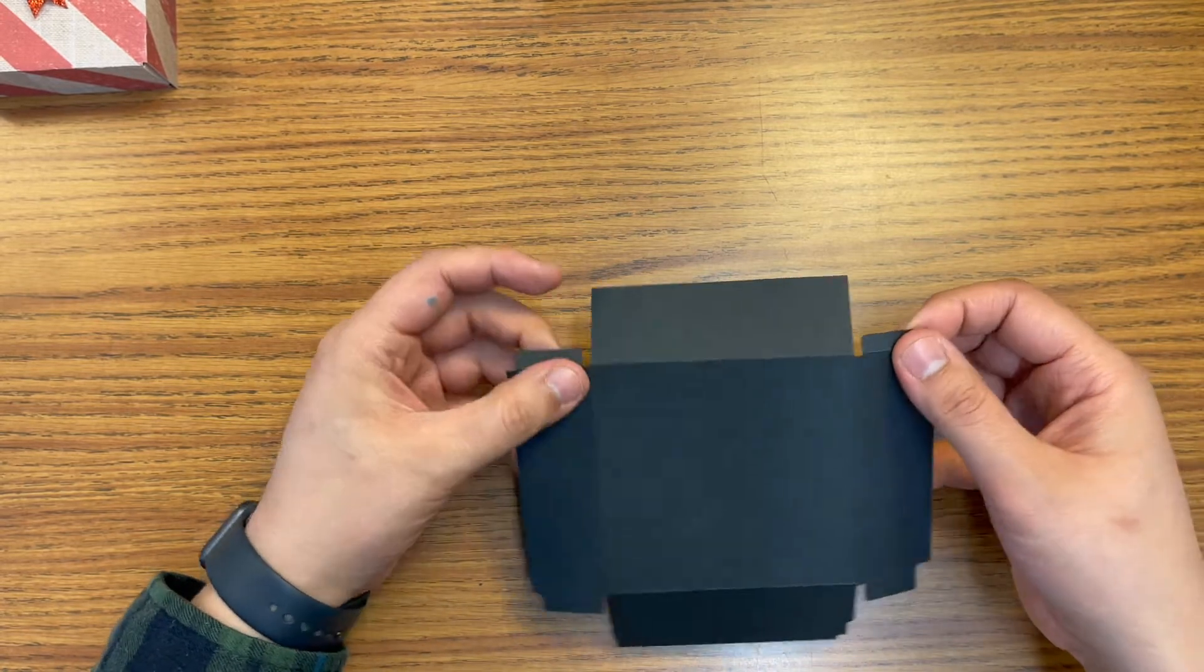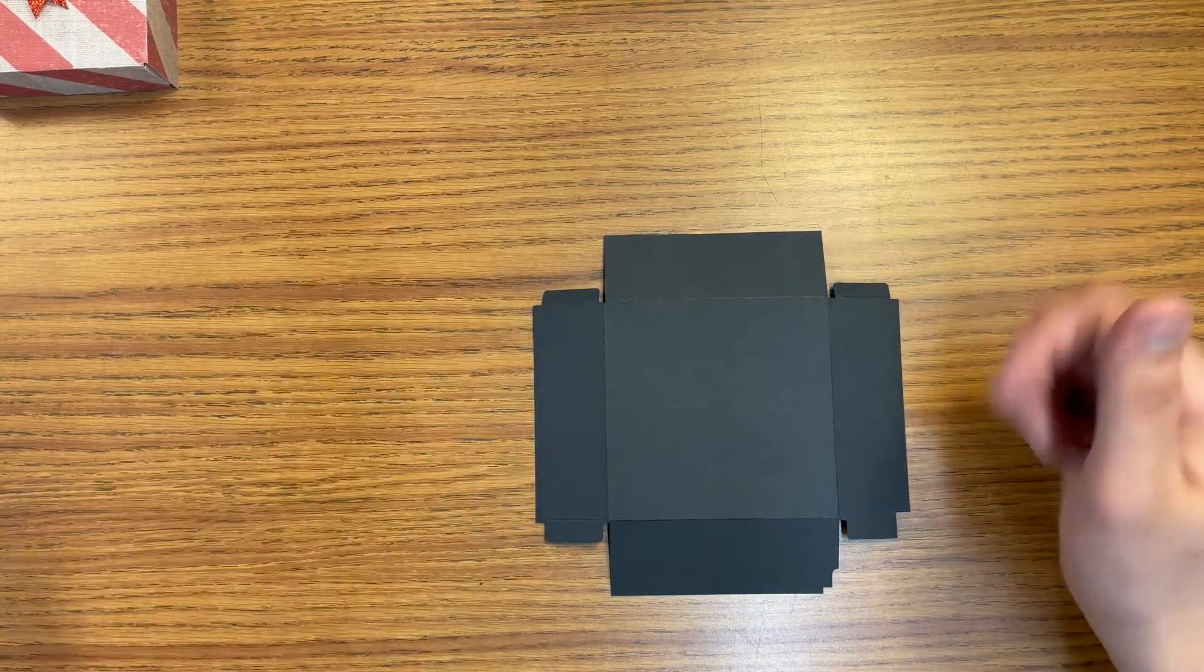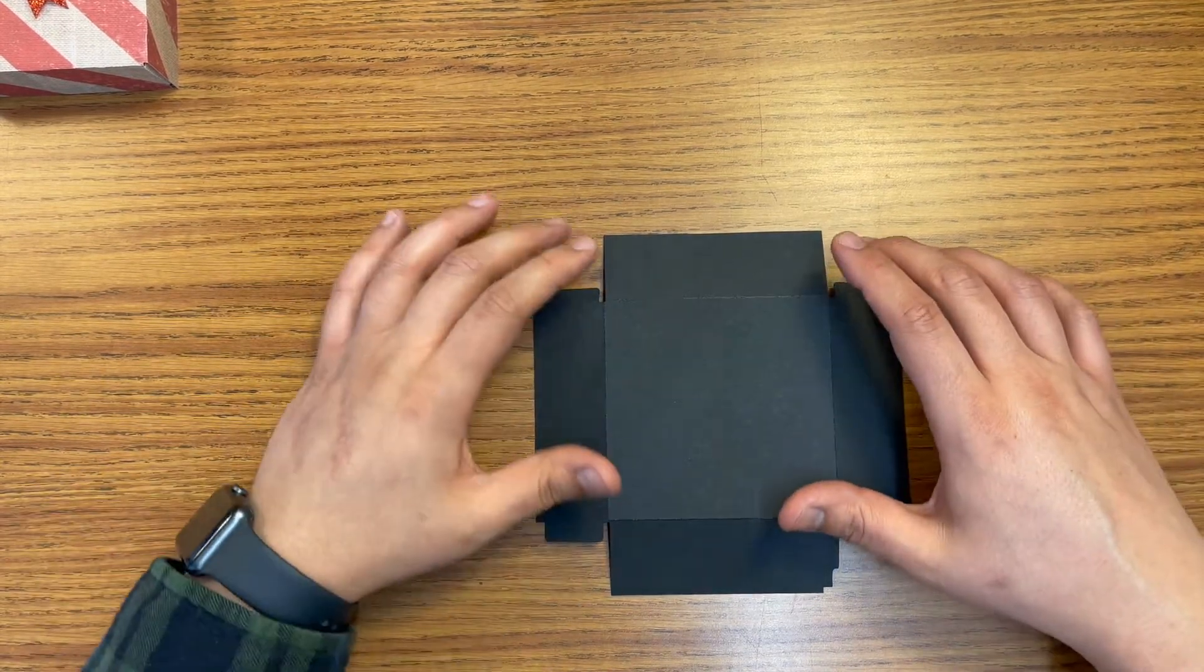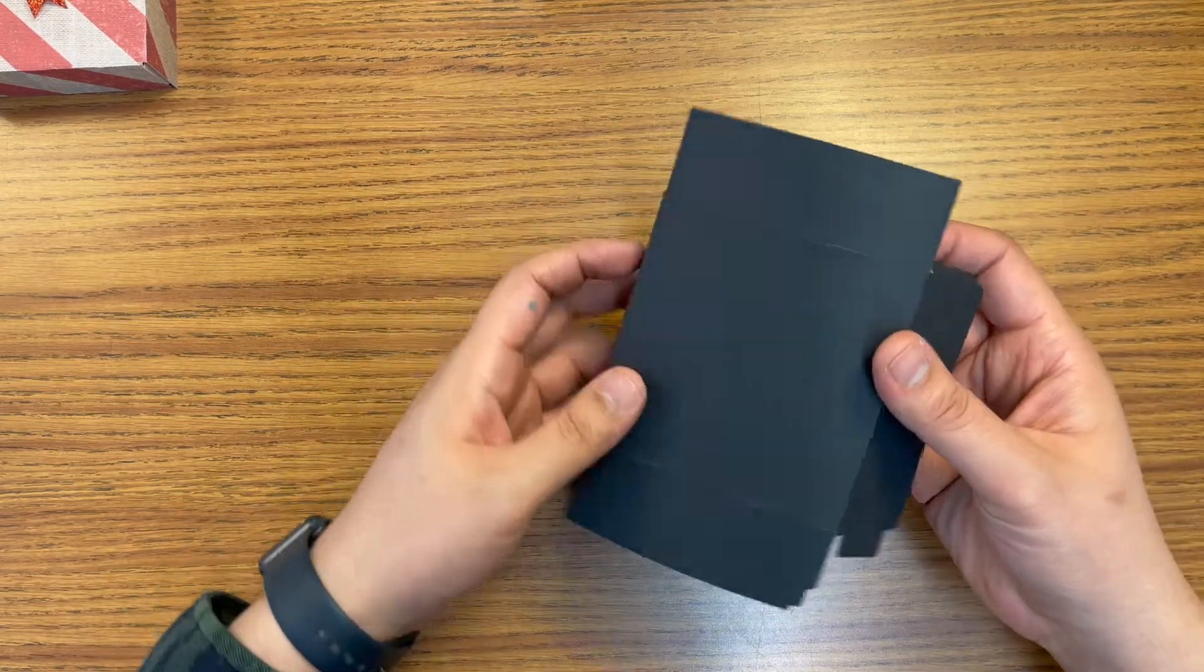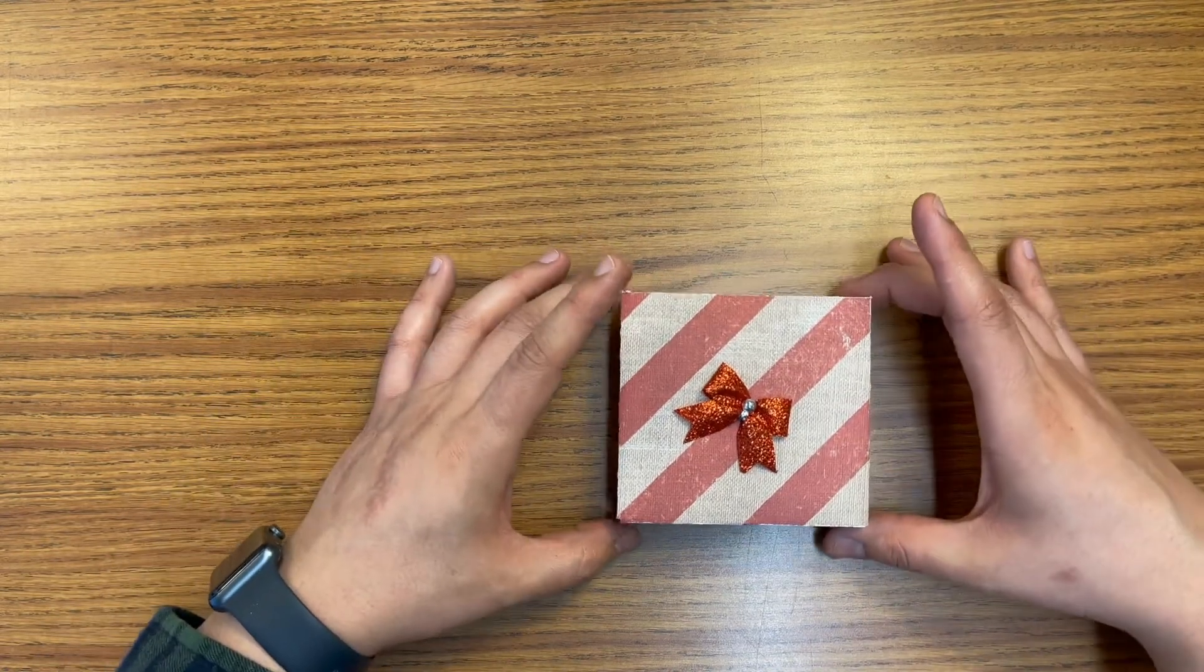Those, that would be another supply that you would probably have to provide from home, is glue or tape and some scissors. But once you get that done and fold it, it'll look like this, you know, ready to go onto your box.